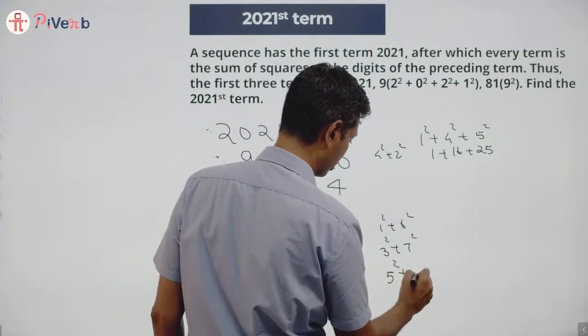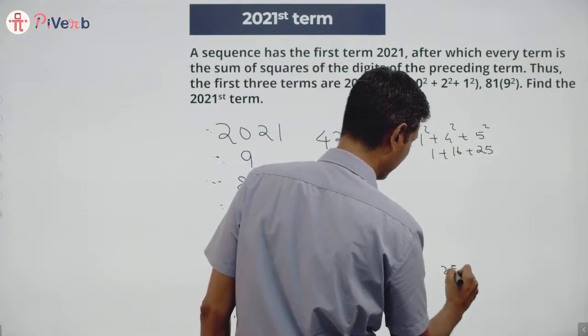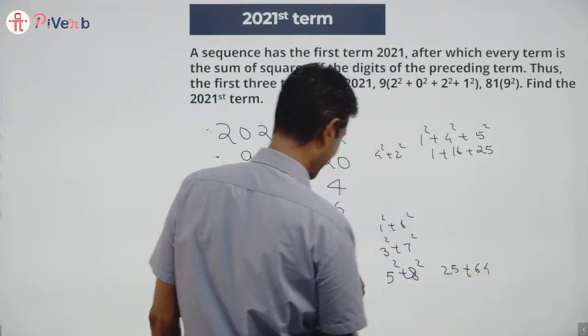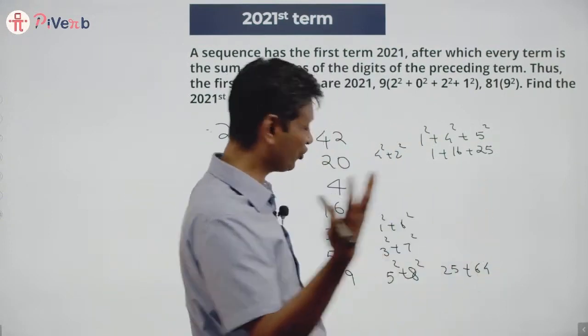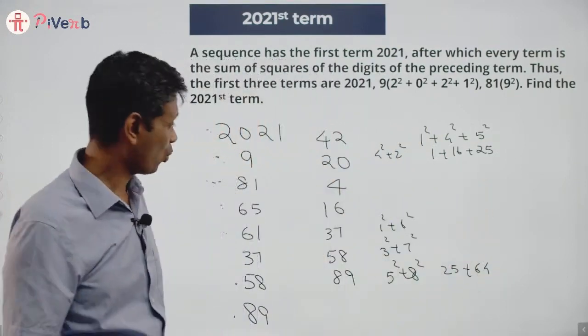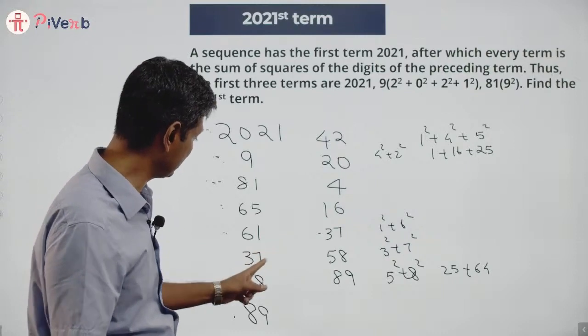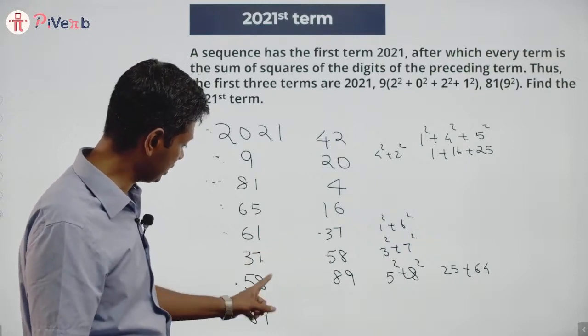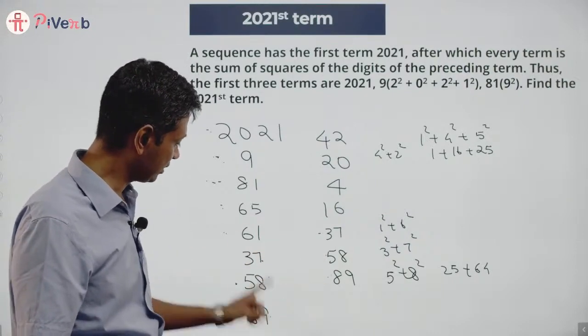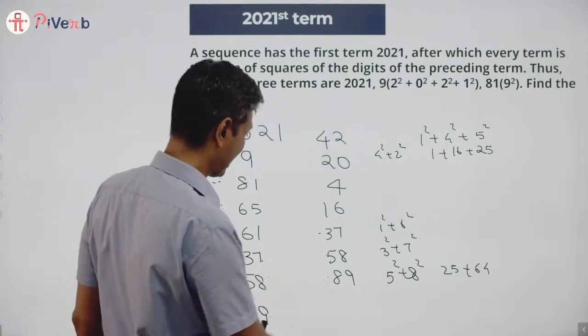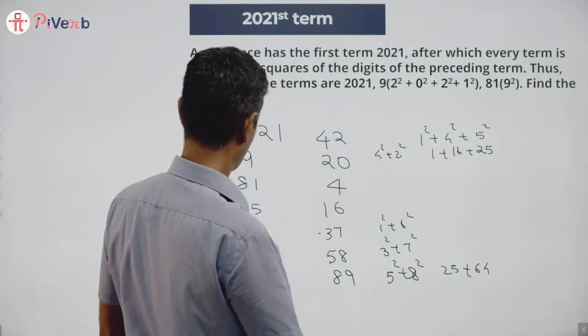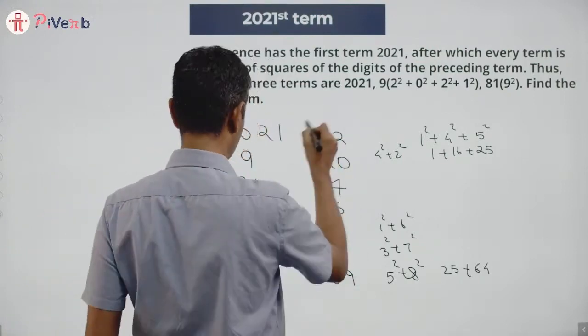Next number is 5² + 8² = 25 + 64 = 89. I've done this before. I can see it happening. I'm done. Why? Because there's a 37 here and a 37 here, a 58 here and a 58 here, an 89 here and an 89 here. The number after 89 will be 145, which I have not written down.